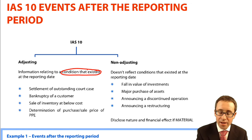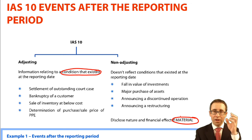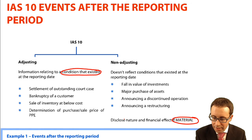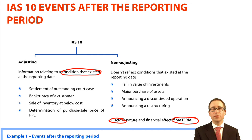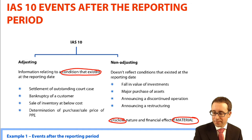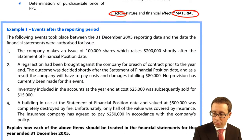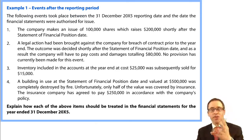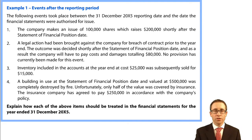Points to note: if any of those non-adjusting events are material — very large — then you will go through and disclose the nature and the financial effects. Don't adjust the numbers in the accounts; just make a disclosure note within the financial statements. That's not a comprehensive list — it's a good few of them, but you can add to them. Look at the questions in the question bank and the study text of your tuition provider and begin to create your own list of what is an adjusting and what is a non-adjusting event.